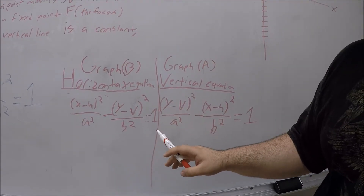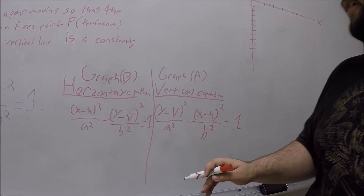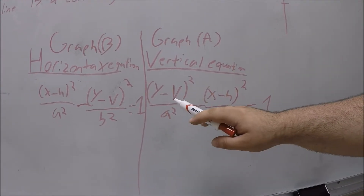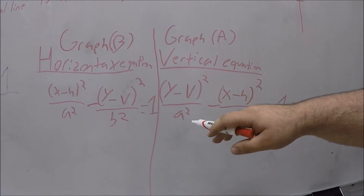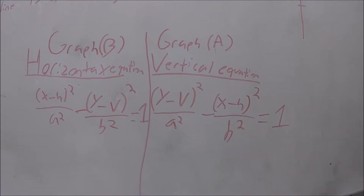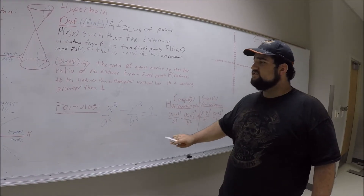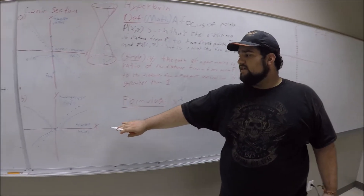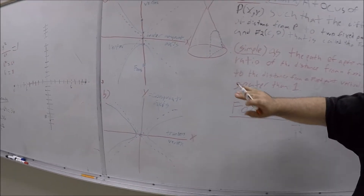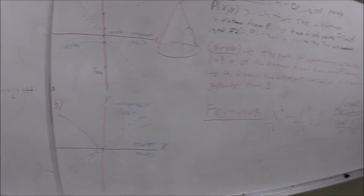To graph it, we plot the points plus 10 and negative 10 on the major axis, plus 8 and negative 8 on the minor axis, and foci at negative 6 and positive 6. Now we draw the ellipse, and that's how you draw the ellipse.